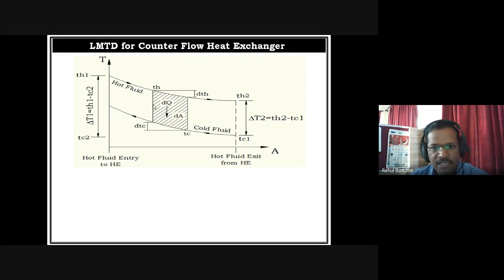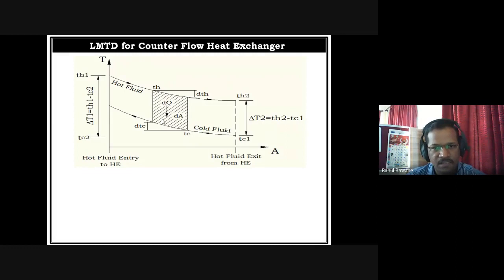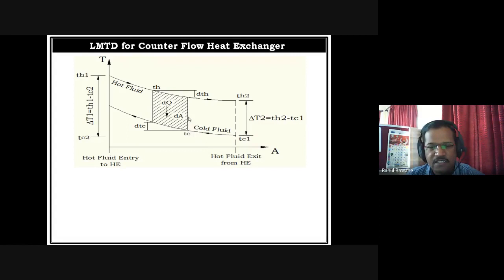Now we consider a small elementary area for our derivation. This is important — it is often asked in practical or oral exams: why do we consider an elementary section? Because the heat exchange from entry to exit is not constant. If it were constant, there would be no need for this. Since the rate of heat transfer is variable throughout the heat exchanger, we first derive a mathematical expression for an elementary section, then integrate from inlet to outlet to get the expression for the whole heat exchanger.